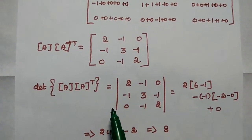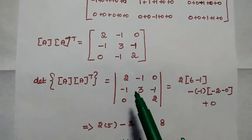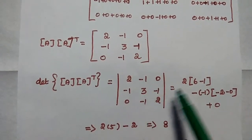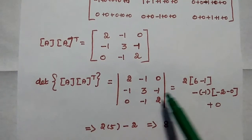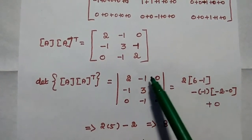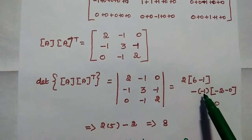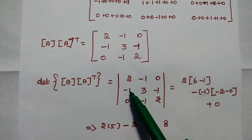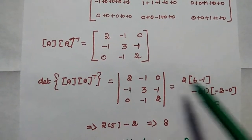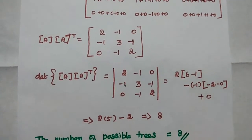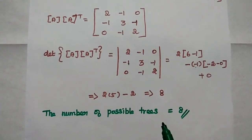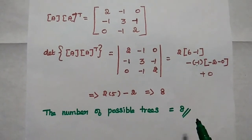Next, we take the determinant of this matrix. We expand along the first row: 2 times (3 times 2 minus minus 1 times minus 1) equals 2 times (6 minus 1) equals 2 times 5 equals 10; minus of minus 1 times (minus 1 times 2 minus 0) equals minus 1 times minus 2 equals minus 2; plus 0 for the last term. The final answer is 8. The number of possible trees for the given network is 8.